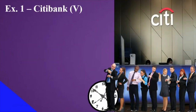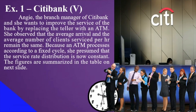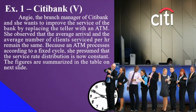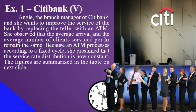Here's the problem. We are still on Citibank — this is the fifth problem. Our topics are connected. So Angie, the branch manager of Citibank, wants to improve the service of the bank by replacing the teller with an ATM. She observed that the average arrival and the average number of clients serviced per hour remain the same. Because an ATM processes according to a fixed cycle, she presumed that the service rate distribution is now constant. That is the reason why our model became MD1.